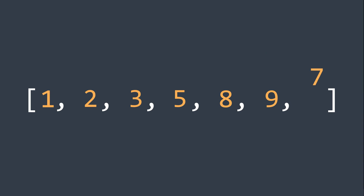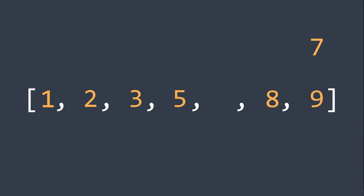Now the last element, 7: we have 9 that is greater, so we shift, same thing for 8, and now 5 isn't greater so we put 7 again. And as you can see, the array is now sorted.